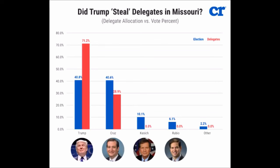According to the United States Constitution Annotated, which is published by the Government Printing Office: "Electors constitutionally remain free to cast their ballots for any person they wish, and occasionally they have done so."